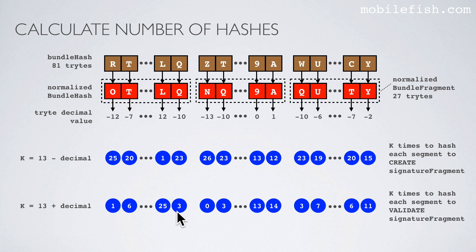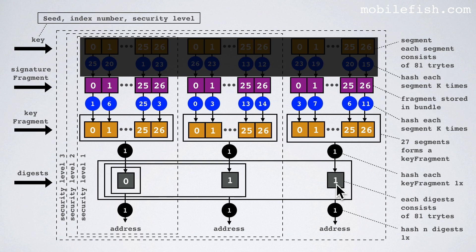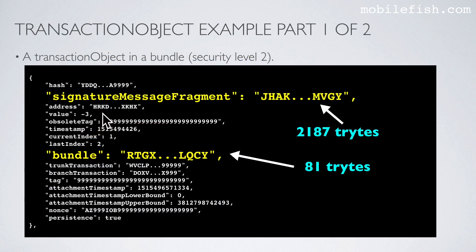For example the numbers are 16, 25, 3. We hash this segment of the signature fragment 1 time to get this segment, we hash this segment 6 times to get this segment, etc. These 27 segments form a key fragment. When you hash this key fragment one time you get the digest. The same applies for each key fragment. If you use security level 1 you only need to hash this digest once to get the address. If you selected security level 2 you combine both digests together and hash them to get the address. And if you selected security level 3 you combine three digests together, hash them, and you get the address. When this address is the same as the address in your bundle then the signature is validated.